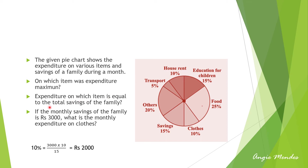Expenditure on which item is equal to the total savings of the family? Savings is 15%, and education for children is also 15%, so expenditure on education of children equals the savings of the family. If the monthly saving of the family is Rs. 3000, what is the monthly expenditure on clothes? Clothes account for 10%. To find the amount, we calculate 3000 multiplied by 10 divided by 15, giving Rs. 2000 as the monthly expenditure on clothes. By examining each sector we can interpret the data.